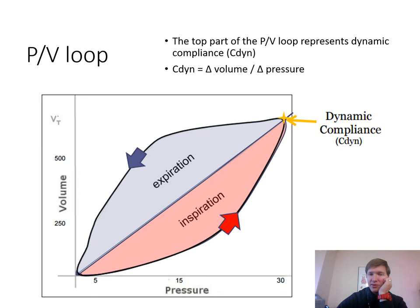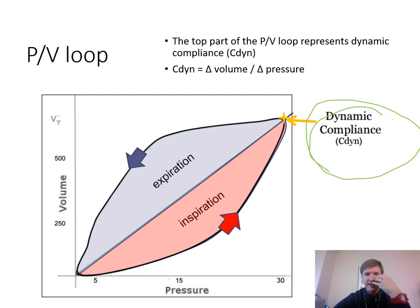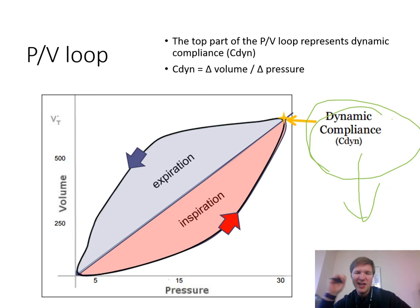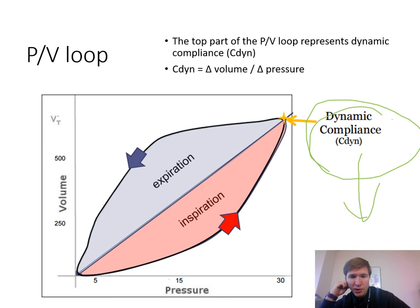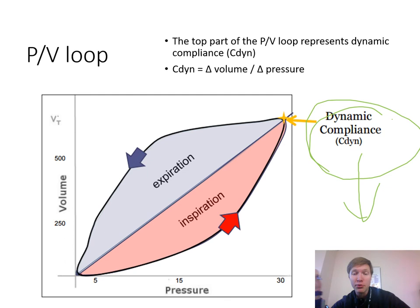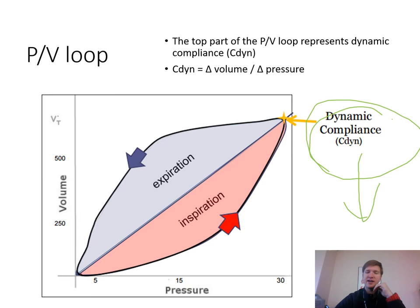The PV loop can be used to look at overdistension, airway obstructions (inspiratory vs. expiratory hysteresis), bronchodilator response, respiratory mechanics including compliance and airway resistance, work of breathing, and air hunger (flow starvation), leaks, and triggering effort. Dynamic compliance is the change in volume over change in pressure. As dynamic compliance decreases — for example from a massive pleural effusion — the tip falls down like a lemon on its side. As compliance improves, the loop becomes more vertical.